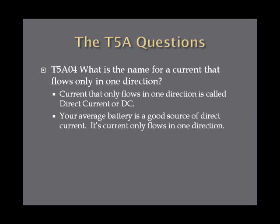What is the name for a current that flows only in one direction? Current that only flows in one direction is called direct current, or DC. Your average battery is a good source of direct current — it only flows in one direction, has a positive and negative end, and doesn't alternate. For the exam, you'll need to know the difference between direct current and alternating current.